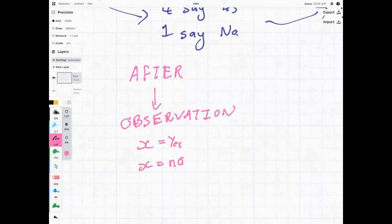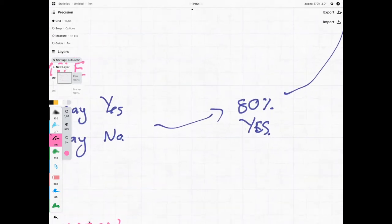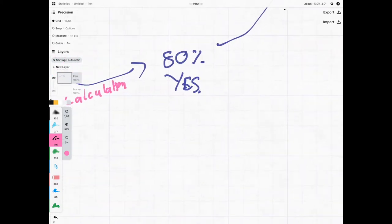Then what we can do, and this is where stats becomes very mathematical, is we need to do calculations in order to determine our statistics. And 80% yes, as you all know, that is a statistic.